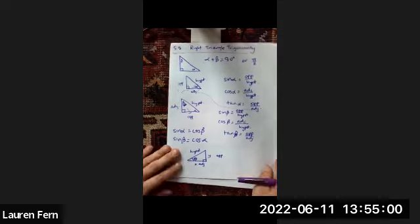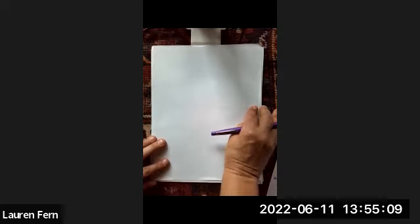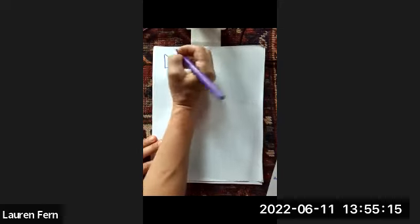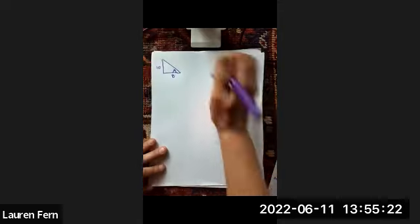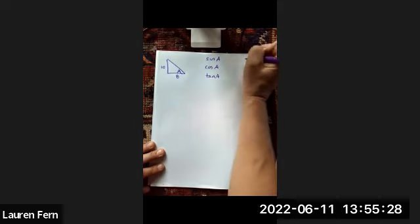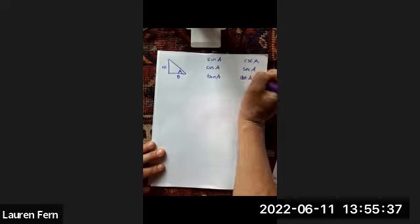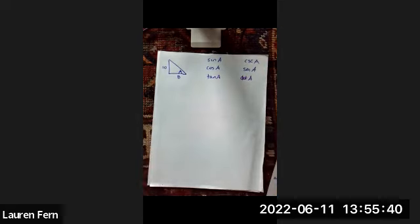Right triangle trigonometry is something you've probably heard of and it's pretty important. If this is my angle A, suppose this side is 10 and this side is 8. I claim I can find my sine, cosine, tangent, and then clearly once I have each of those, I can get their reciprocals — sine, cosine, tangent, secant, cosecant, cotangent.